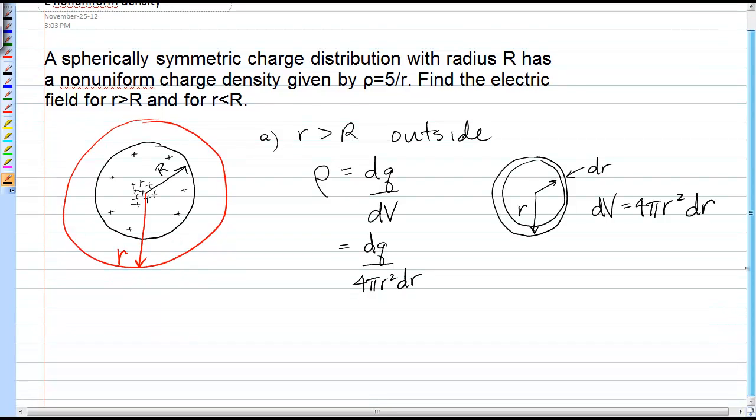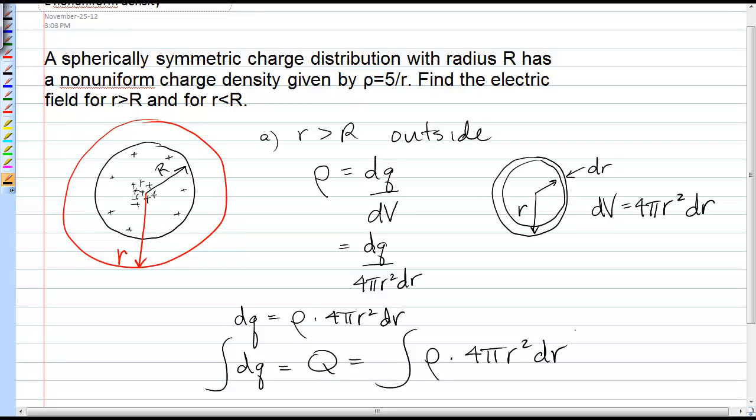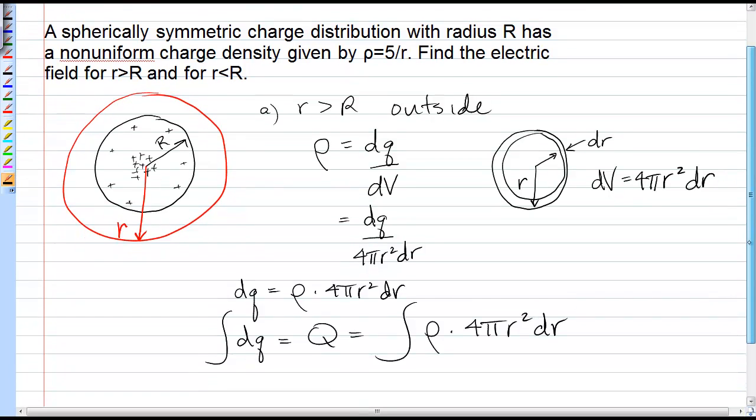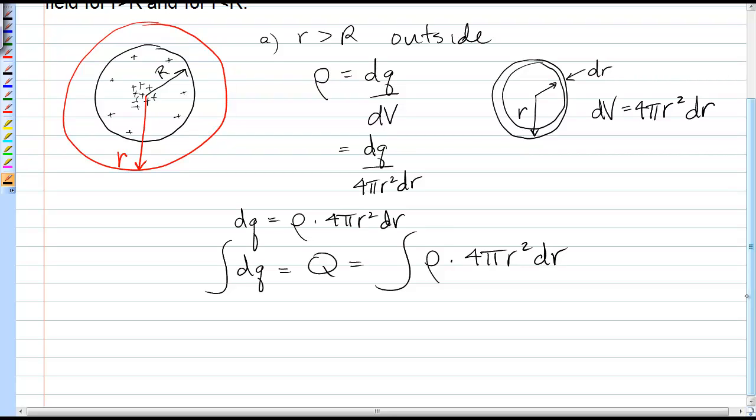To get the total charge inside that sphere, we solve for dq. dq equals ρ times 4πr²dr. Integrate both sides, and the integral of dq is just Q total, and we have to integrate ρ times 4πr²dr. That's the integral you use every time you have a non-uniform charge density and a spherical charge distribution.